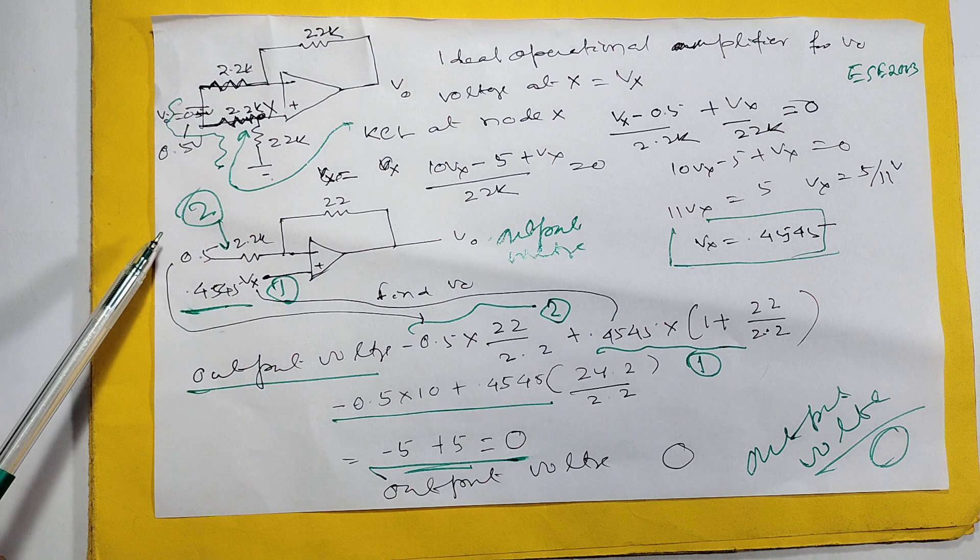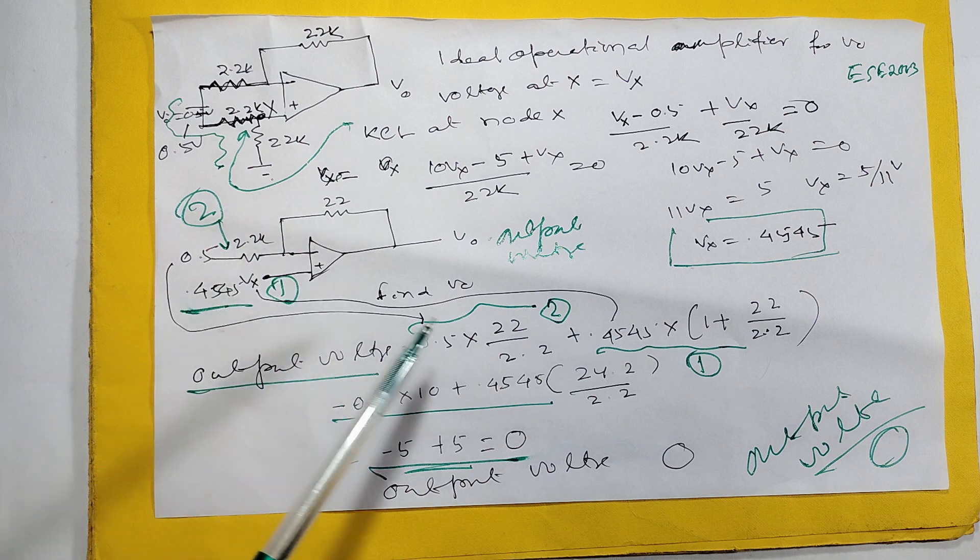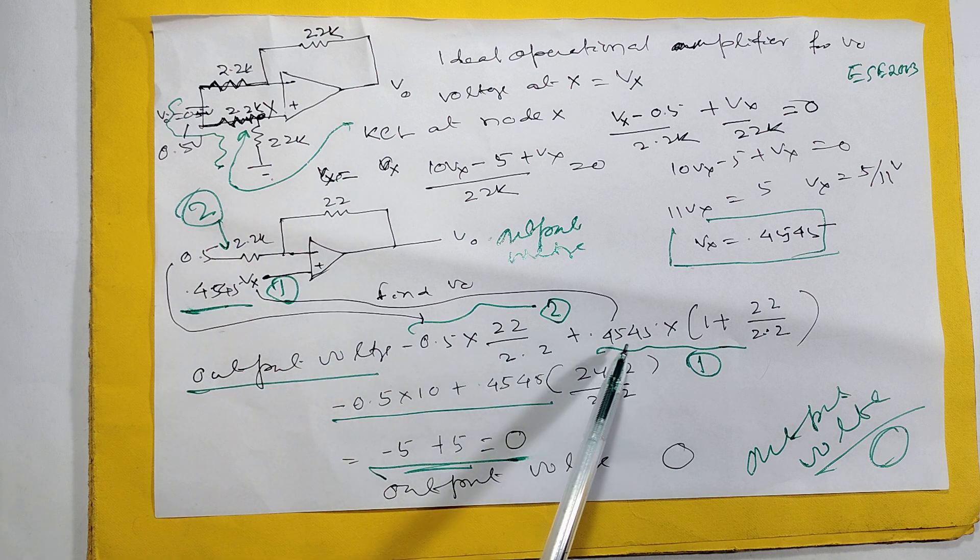This is minus 0.5 into 22, Rf by R1, 22 by 2.22. This is 4.45. Mind it, this is in which mode?